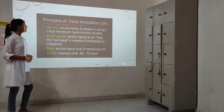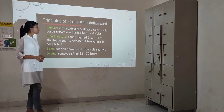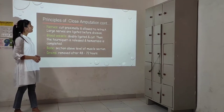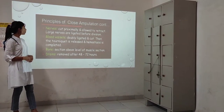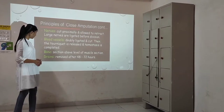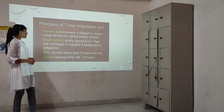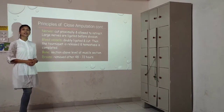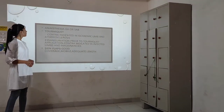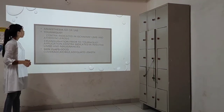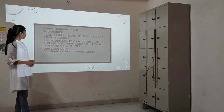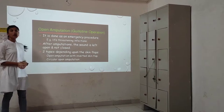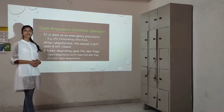Nerves are cut proximally and allowed to retract; large nerves are ligated before division. Blood vessels are doubly ligated and cut until the tourniquet is released and muscle suture is completed. Bone section is done above the level of muscle sections. Drains are removed after 48 to 72 hours. Anesthesia is also considered. Skin clips are used for closure.